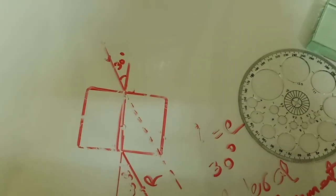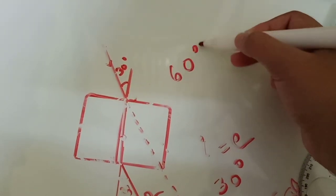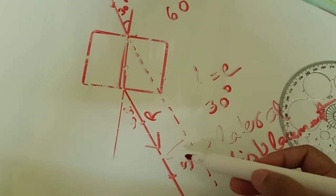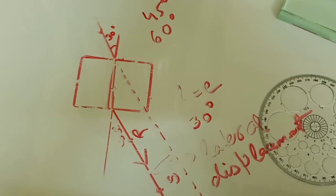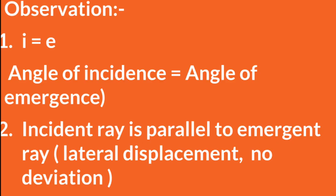Now we can repeat this experiment using different incident angles, for example 60 degrees, 45 degrees, or 35 degrees—any angle of your choice—and check if you are getting the same angle as your angle of emergence and a lateral displacement with parallel lines.